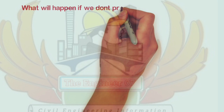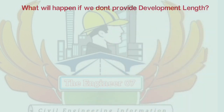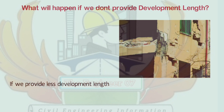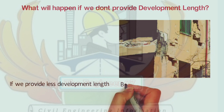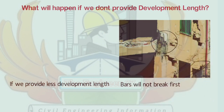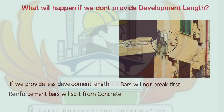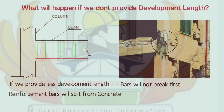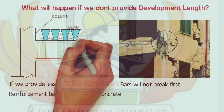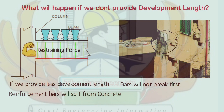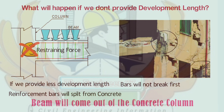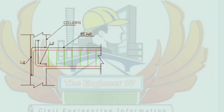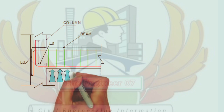Now let us understand what will happen if we don't provide development length. If we don't provide development length, or if we provide less than the required, then the structures will be prone to failure due to slippage of joints. In such cases, the bars will not break first but failure will happen at joints and laps prior to breaking of reinforcement bars. In short, reinforcement bars will split from concrete. If we apply force more than the maximum permissible limit at a beam-column joint where development length is not provided, the restraining force between the beam and the concrete column will not be sufficient to hold the beam at its position, and the beam will come out of the concrete column.